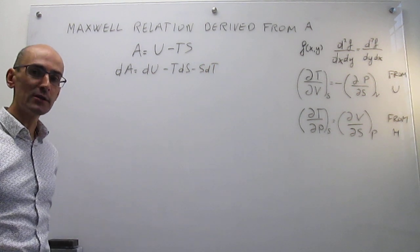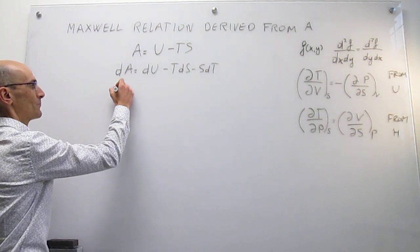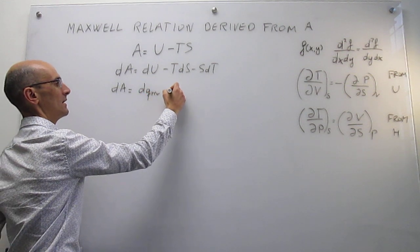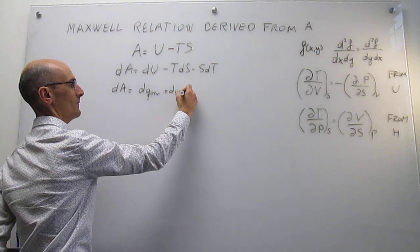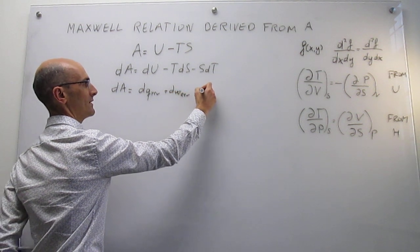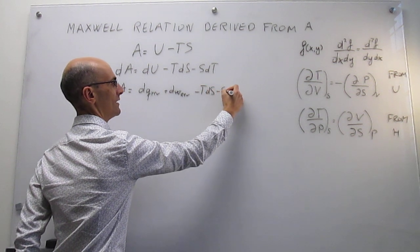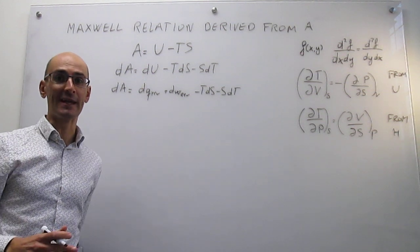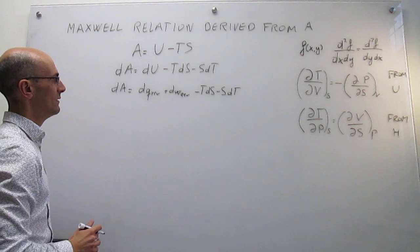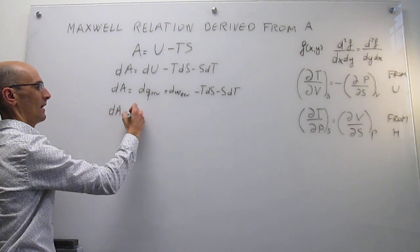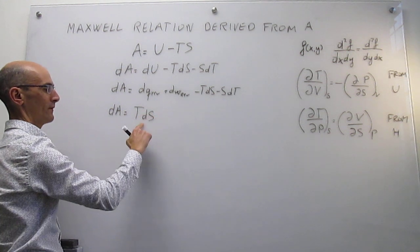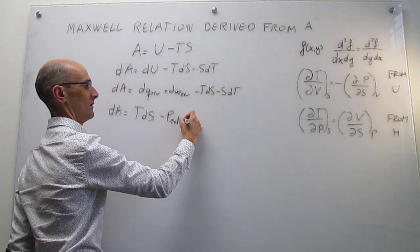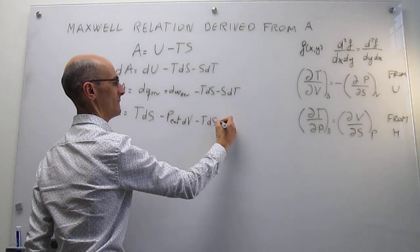Now we invoke the first law of thermodynamics for a reversible process. The internal energy turns into reversible heat and reversible work, with the provision that this work is only expansion work — we're not extracting any non-expansion work. If that is the case, we can apply the second law, the thermodynamic definition of entropy, giving us TdS for the heat term, plus expansion work minus T dS minus S dT.